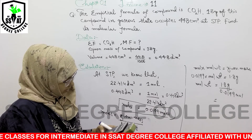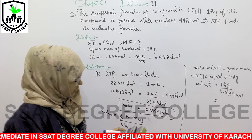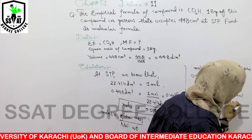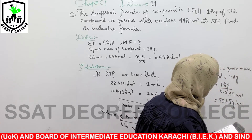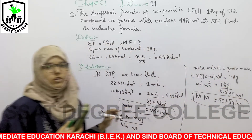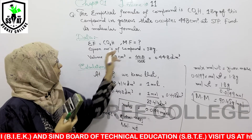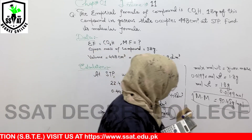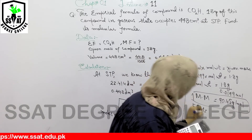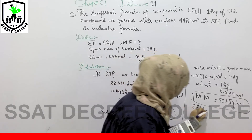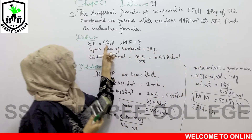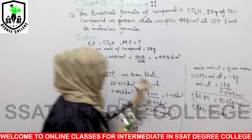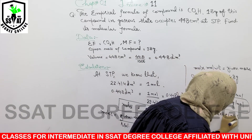1.8 divided by 0.0199 gives 90.45 grams per mole — that is the molecular mass. Now we have the molecular mass and the empirical formula. We calculate the empirical formula mass for CO₂H: carbon = 12, plus 2 × oxygen = 2 × 16 = 32, plus 1 hydrogen = 1. So empirical formula mass = 45 grams.